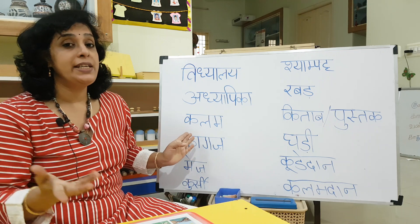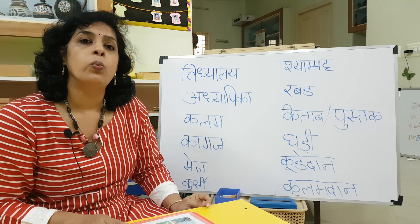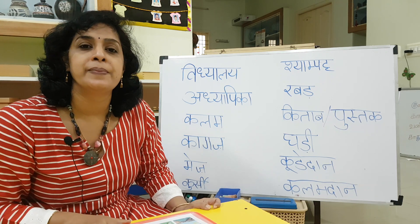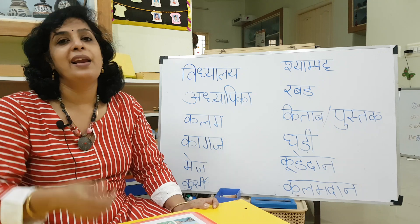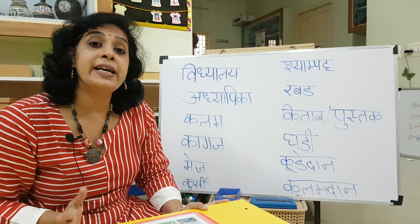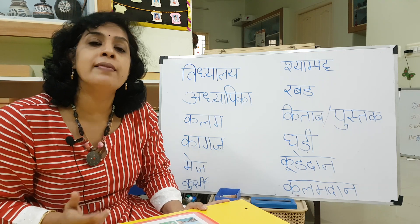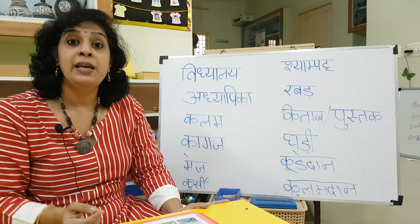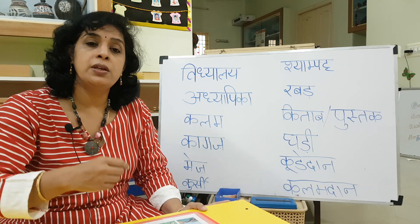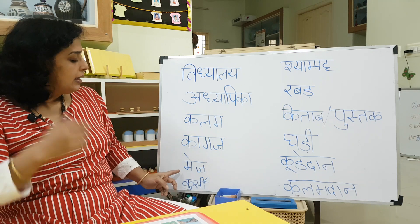Adhyapika — teacher, your lady teacher. Next one is Kalam. What is Kalam? I use Kalam for writing. Kalam is pen. Next one: Kaagaz. Kaagaz means paper — the loose sheets of paper are called Kaagaz. Please give me some kaagaz, I want to do drawing — mujhe chitra banani hai, kaagaz dijiye.